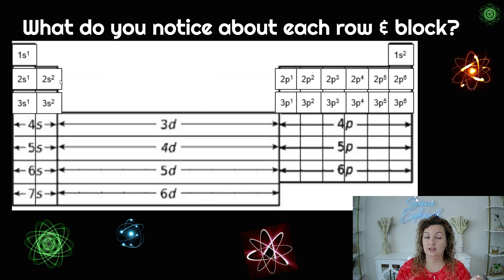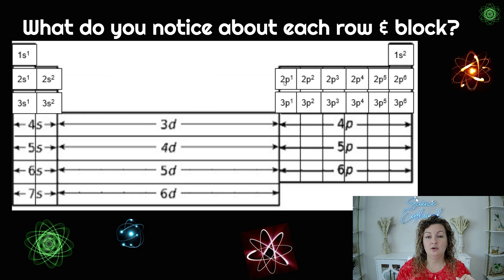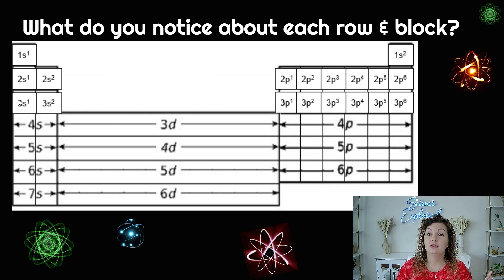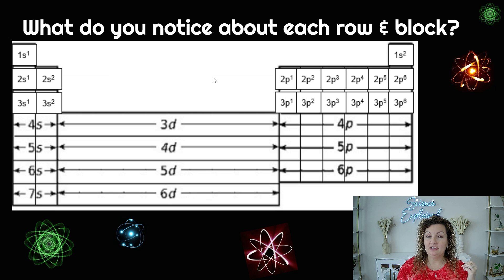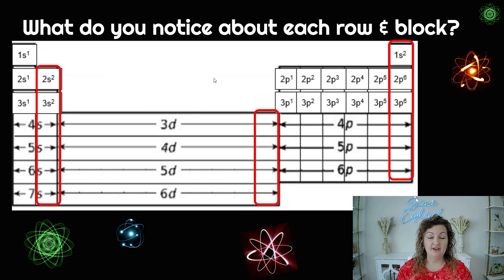We're still on the second row, still on the S block, but now we have two electrons, and we're gonna skip all the way over. So we're not gonna go down — we're gonna go as if we're reading, all the way over on the same line. We're still on the second row, but now this is the P block and we have one electron. And we can continue 2, 3, 4, 5, 6 electrons, to the next row, which is the third row: S block 1, and then 3s2. Skip all the way over and we're in the P block again, and you're gonna continue to do this until you stop at your endpoint.